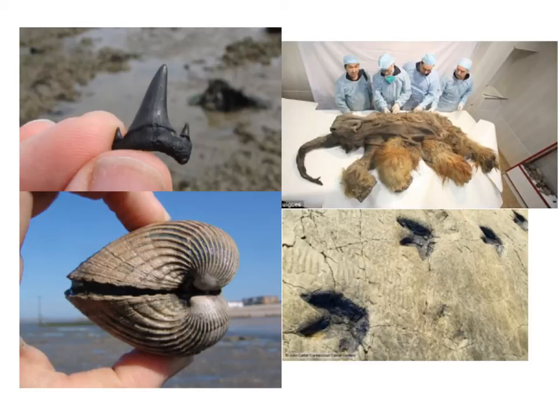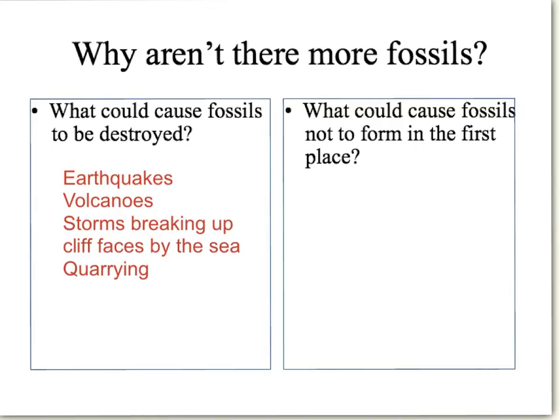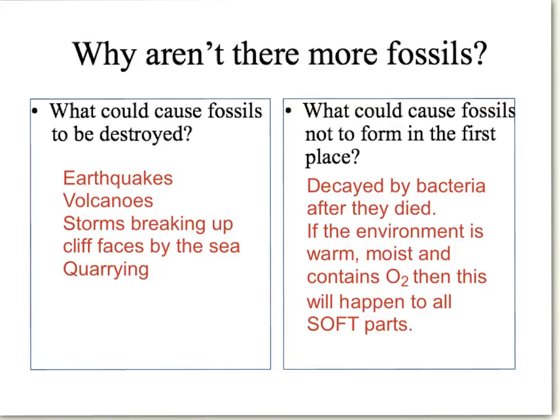We also need to know why there aren't more fossils, because sometimes exam questions ask this. Sometimes fossils are destroyed — they're formed, but before we get to find them, something has destroyed them. Also, sometimes fossils won't even form in the first place, and this is even more likely. Soft parts of animals that died millions or thousands of years ago are decayed by bacteria in the right conditions — warmth, oxygen, moisture — so we're never going to find those as fossils because they got destroyed by bacteria acting on them, decaying and rotting them away before they could even become a fossil.